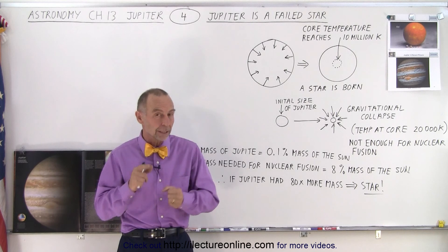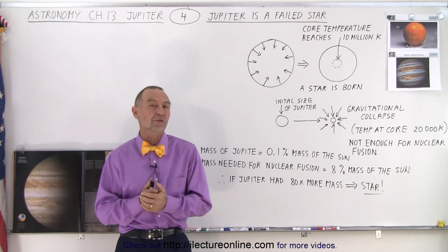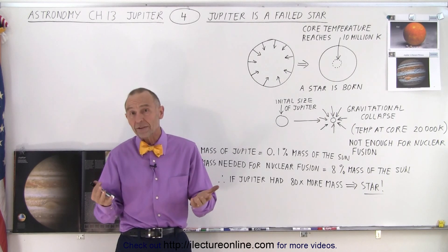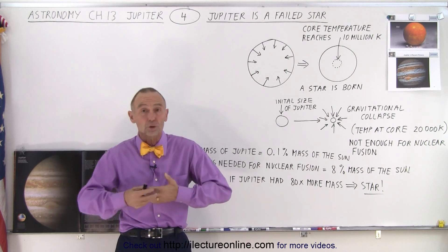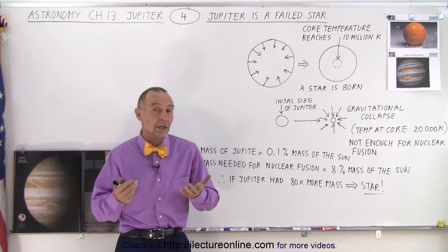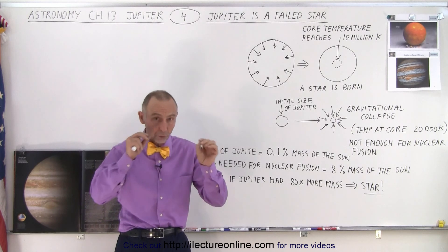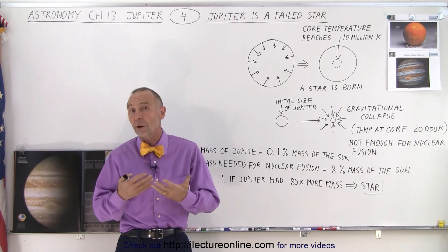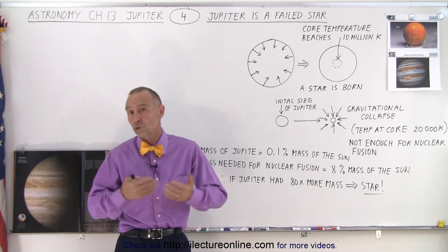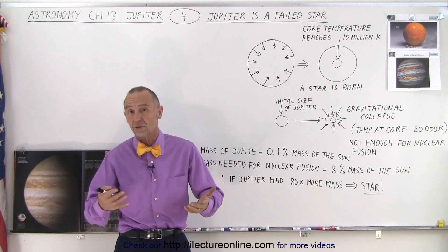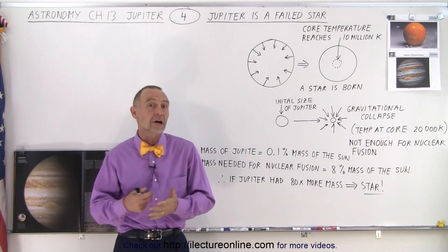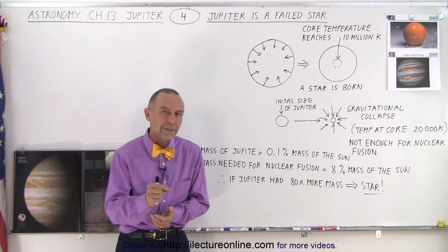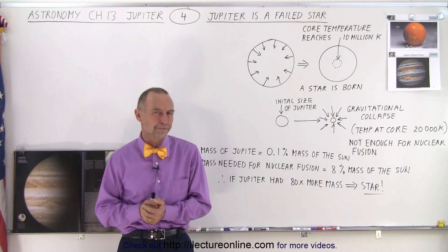If Jupiter had been bigger it would have become a star. And now we realize that the majority of solar systems out there consist of more than one star. Two stars or three stars is very, very common — more common than a single star.